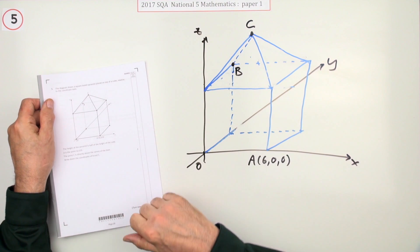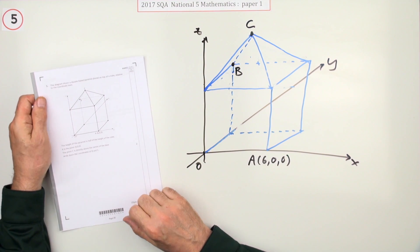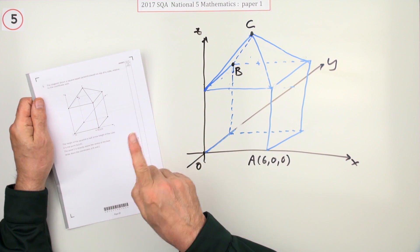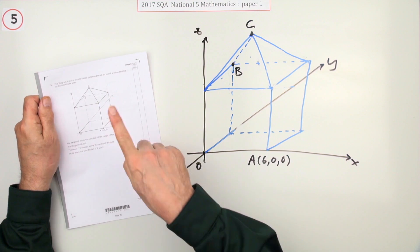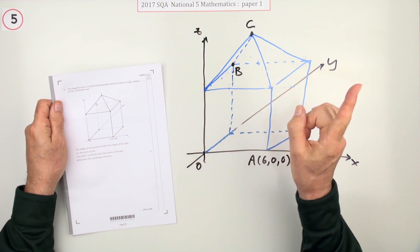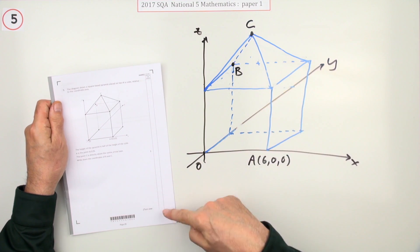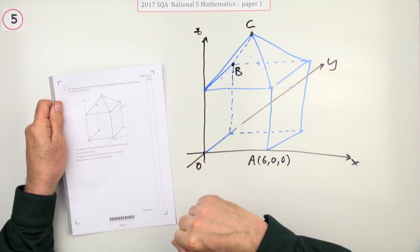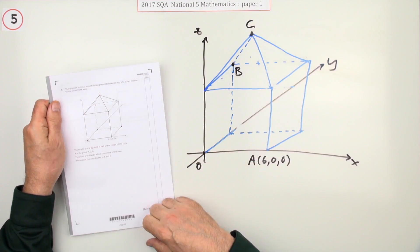Number 5 then from the 2017 National Five paper, paper one. Three-dimensional coordinates. You've got a diagram given, some clumsy sketch over here which is made up of a cube.